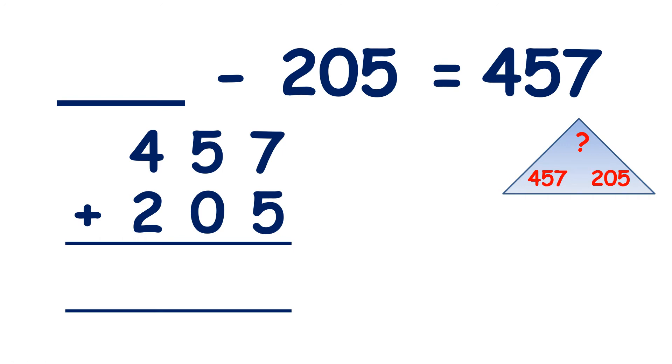So let's start with the units. If we have 7 plus 5, we get 12. So we've made 1 ten, which we can write underneath our tens, and we have two units. Now moving on to our tens, we have 5 plus 0 plus 1. That's the 1 ten that we made from our units, so we have 5 plus 1, we have six tens. And now on to our hundreds, we have 4 plus 2, which is 6. So our missing number is 662.